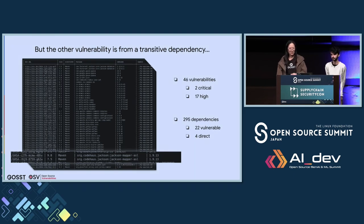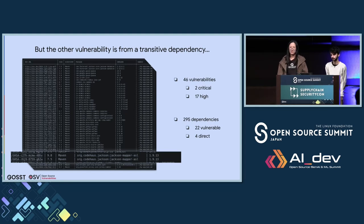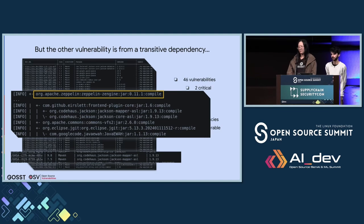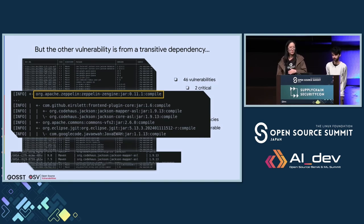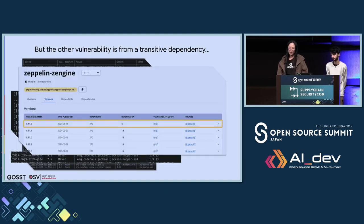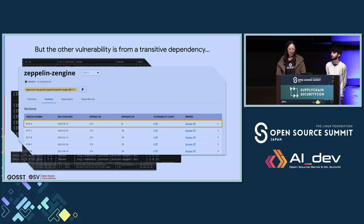We then try to fix the other critical vulnerability, which is brought by a transitive dependency called Jackson-mapper-ASL. To fix a transitive dependency, we need to first figure out which direct dependency depends on it, so we look at the dependency graph resolved by Maven. After tracing the transitive dependency, we find that Zappline's Engine is the direct dependency that brings in Jackson-mapper-ASL transitively. The tricky question is: which version should we bump this direct dependency to in order to get rid of the vulnerability? Maven Central only indicates direct vulnerabilities on a package version, but not transitive ones.